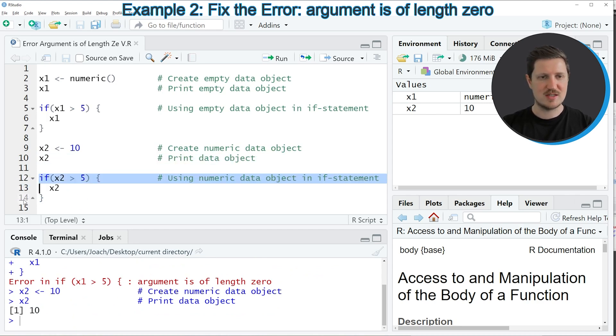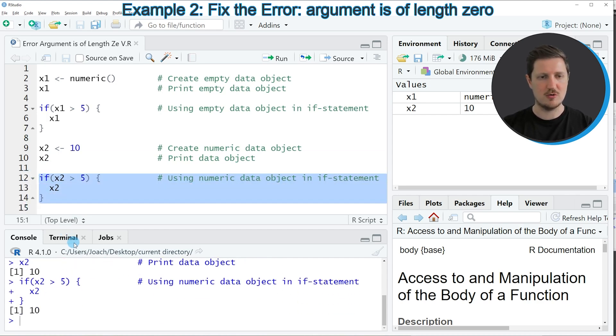And now in the next step, I'm applying basically the same syntax to our second data object as I already did in the previous example. However, this time, if we run lines 12 to 14 of the code, a valid output is returned and no error message is shown anymore. The reason for that is that our data object contained a value and was not empty.